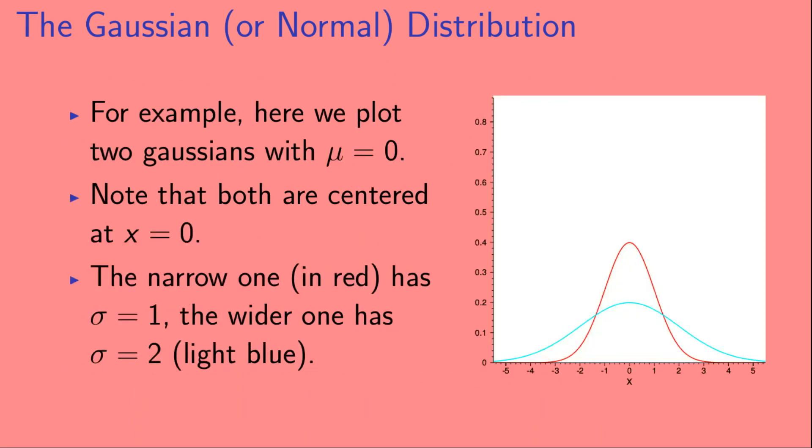For example, here we plot two Gaussians with mu equal to 0. Note that both are centered at x equals 0. The narrow one, in red, has sigma equal to 1, and the wider one has sigma equal to 2. That's shown in light blue.